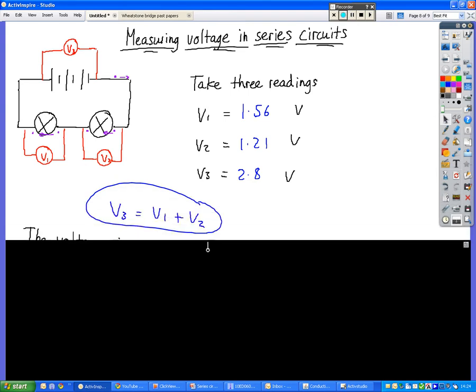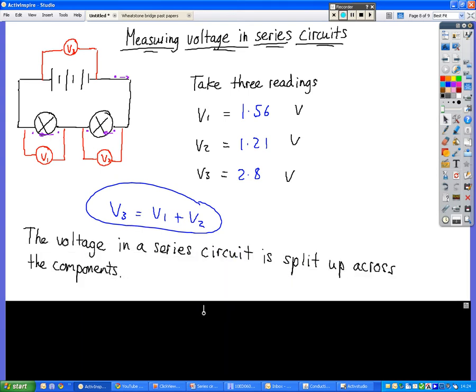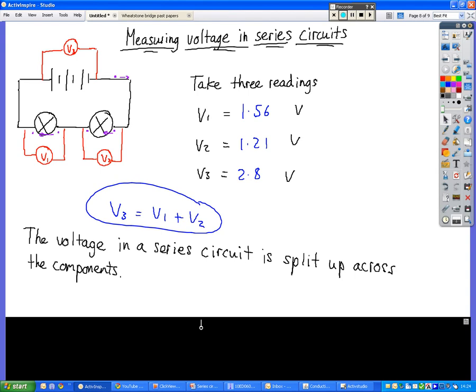The amount of energy that is supplied to the charges in the battery is equal to the sum of these voltages across these components. That's why we can say V3 equals V1 plus V2. So the voltage in a series circuit is split up across the components.